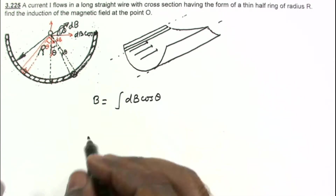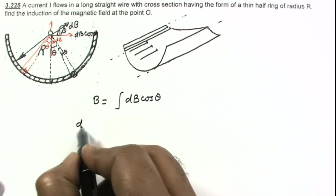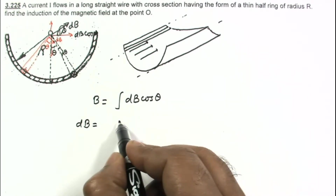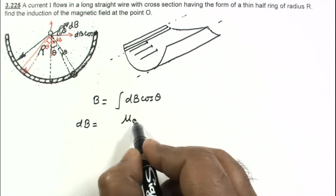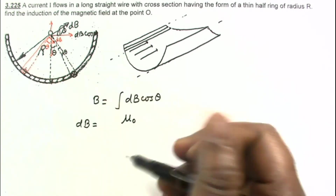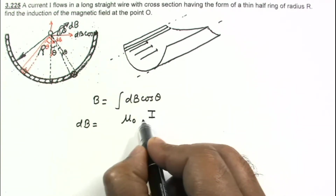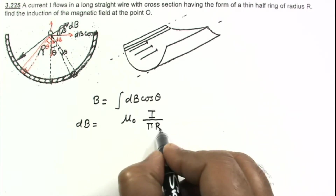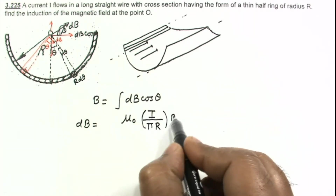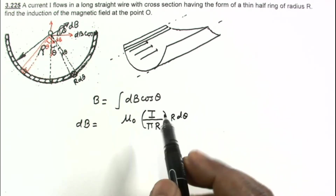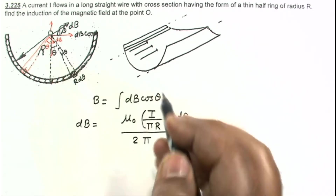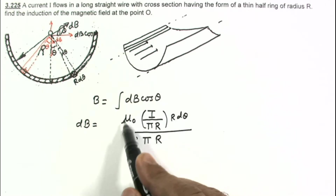To find the net magnetic field, we integrate dB cos theta. The expression for dB is the magnetic field created by an infinite wire. The formula is mu naught times i, where the current from this small element is the total current i divided by pi r (current per unit length) multiplied by the length r d theta. So dB equals mu naught i divided by 2 pi r.